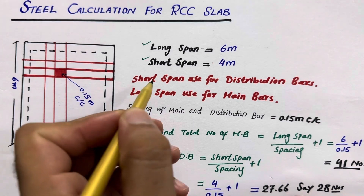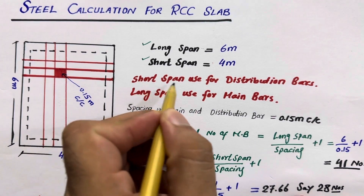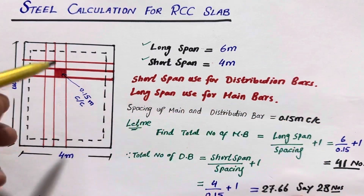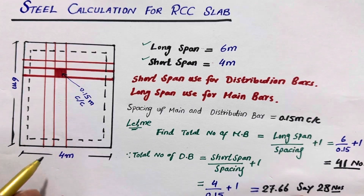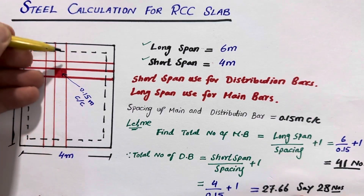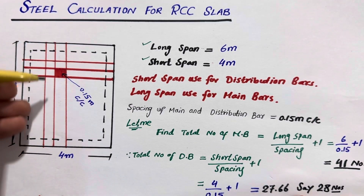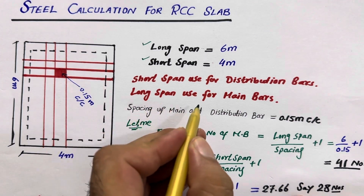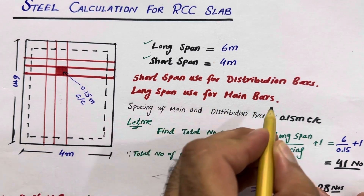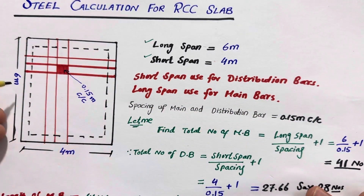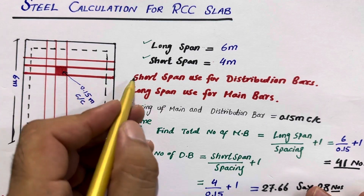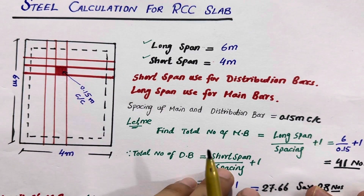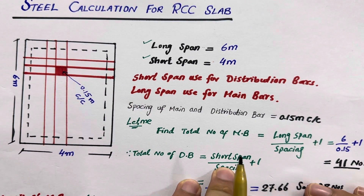The shorter span is used for distribution bars. When we are placing the steel reinforcement on this side, these are distribution bars. The long span is used for main bars — when we place steel reinforcement on the six meter span, that is called the main bar. Main bars should be placed before distribution bars.